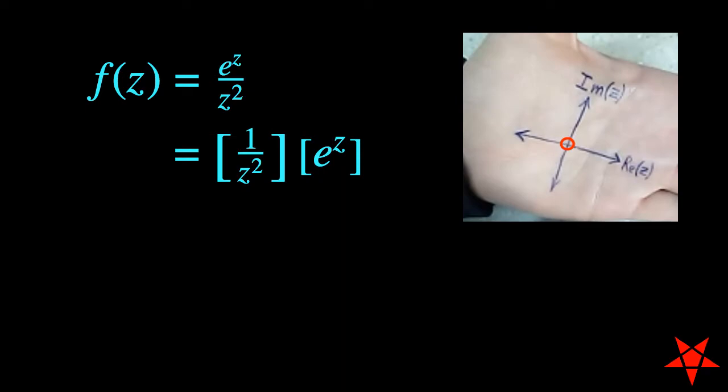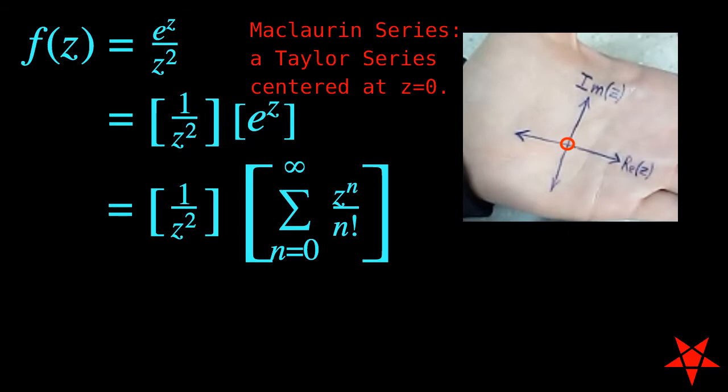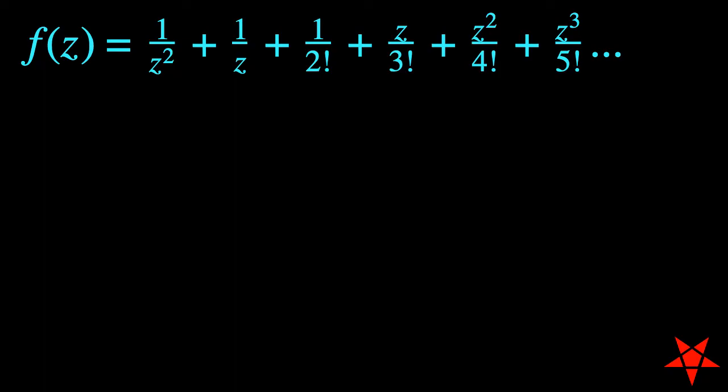This leaves us with the quantity of 1 over z squared multiplied times e to the z. From here, we can expand the e to the z term as a Maclaurin series before carrying through the multiplication of 1 over z squared with the individual terms.